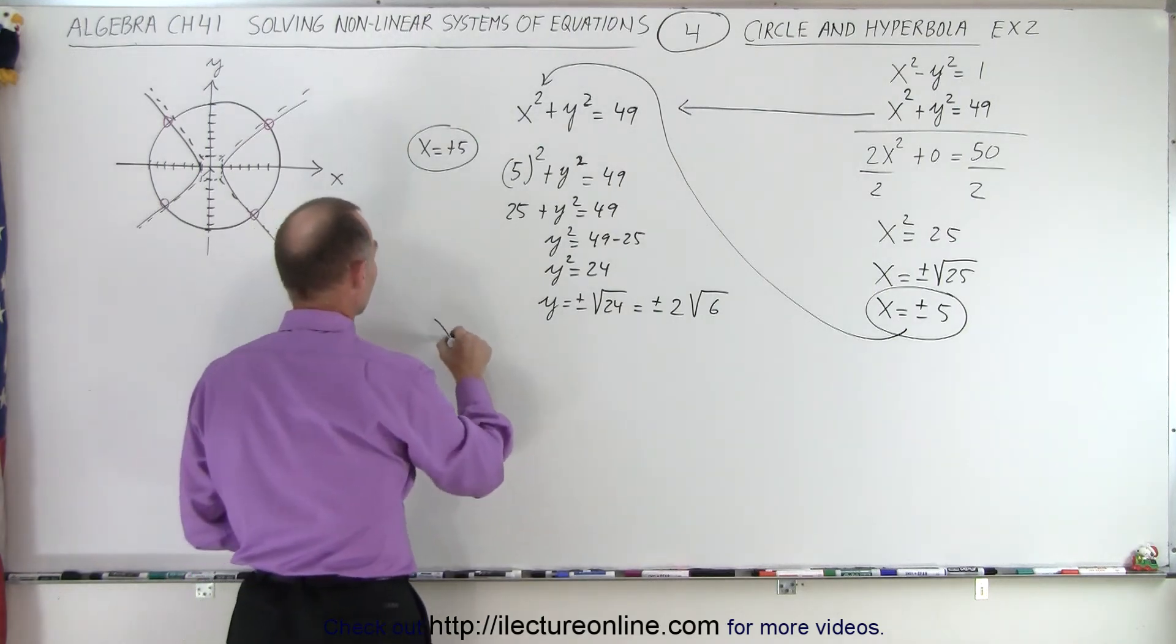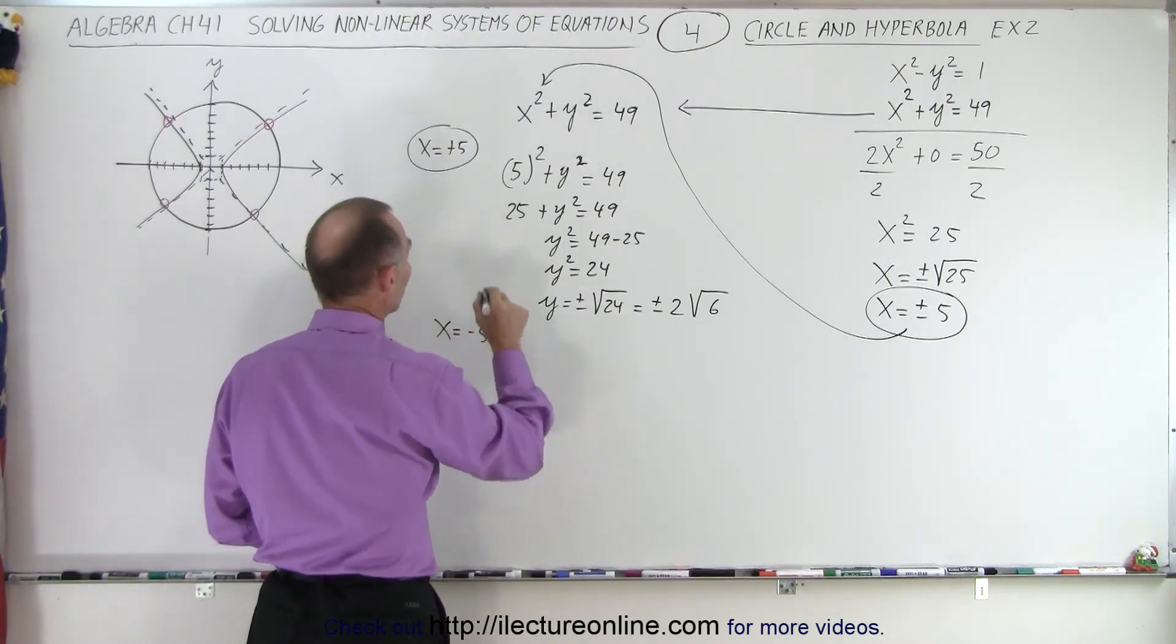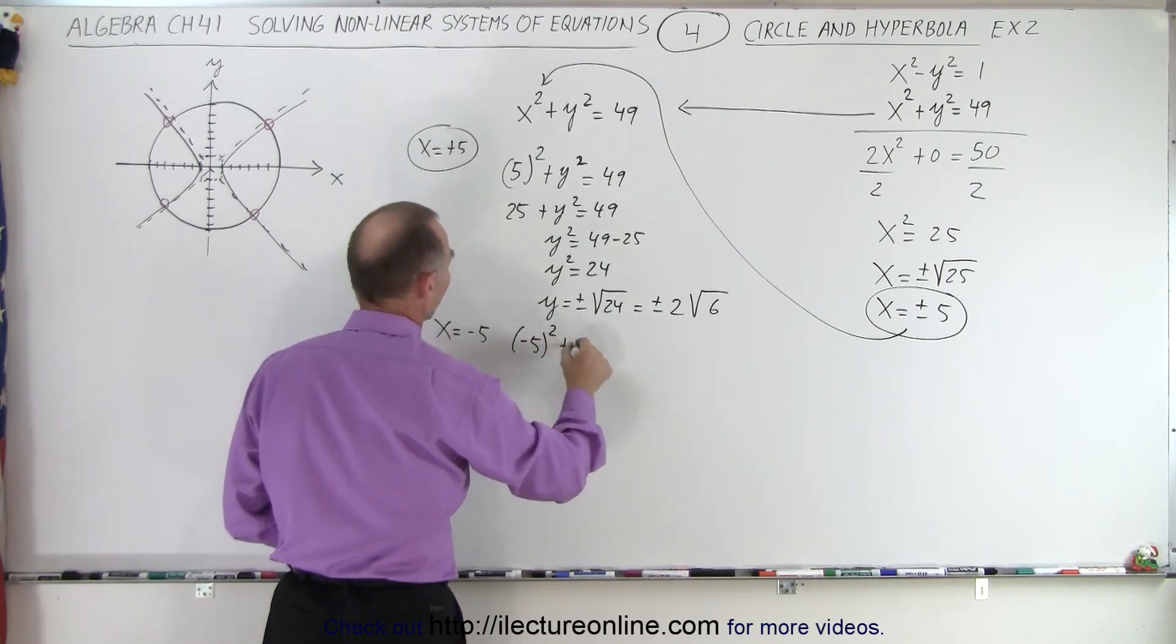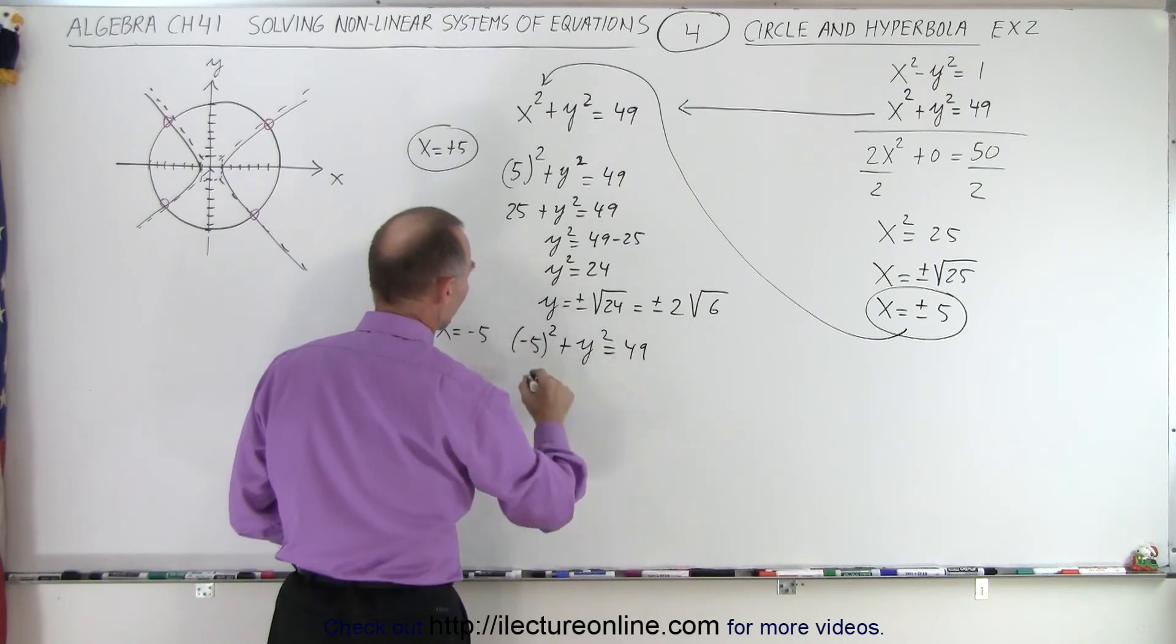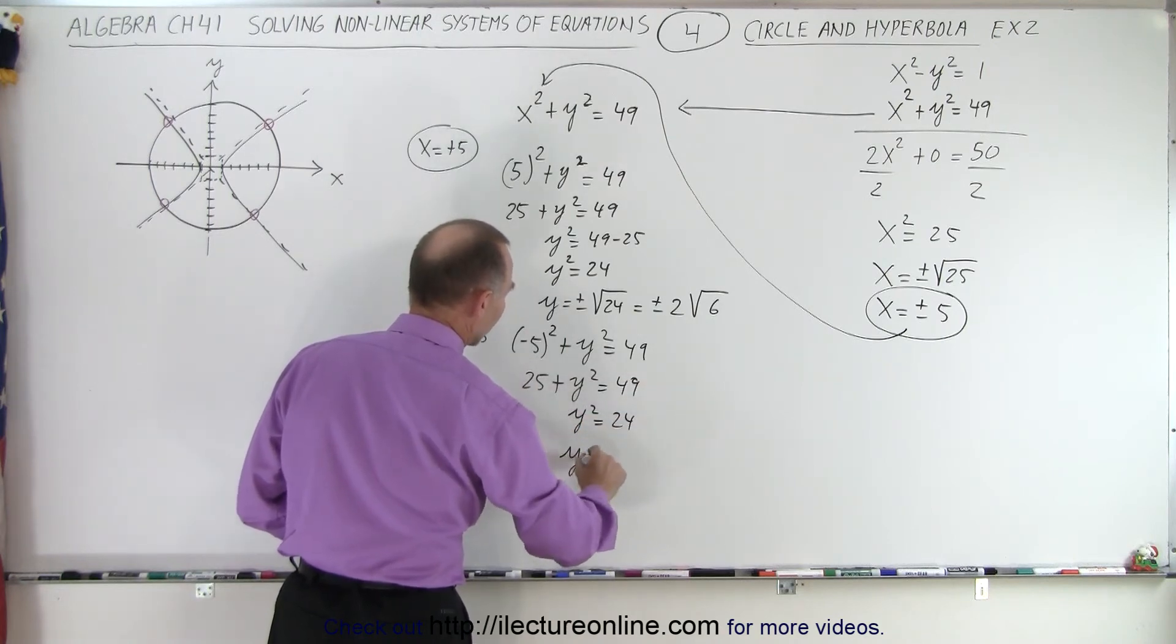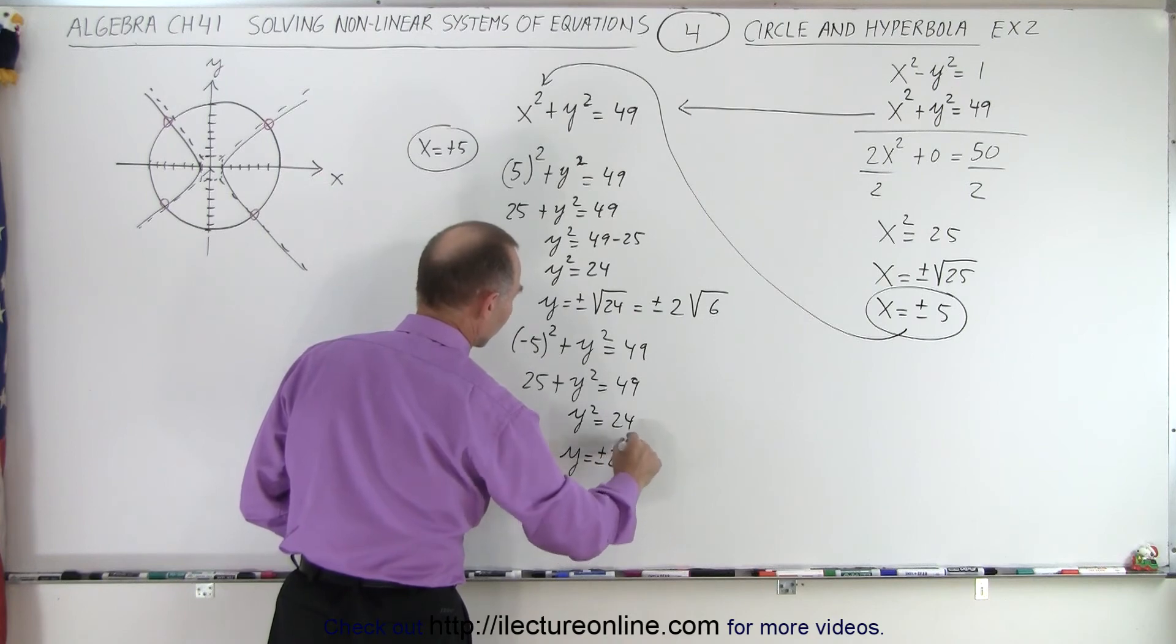I can do the same for x equals negative 5. But notice nothing really will change because negative 5 squared plus y squared equals 49. Becomes 25 plus y squared equals 49. Or y squared equals 24. Or y is equal to plus or minus 2 times the square root of 6.